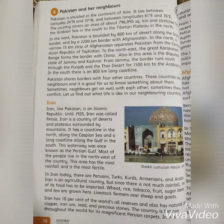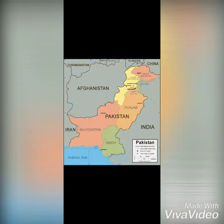Pakistan ke neighbors koun koun hain? Pakistan ke neighbors — those countries around Pakistan's border. The first country of Pakistan's neighbors, which is our first neighbor, is Iran.